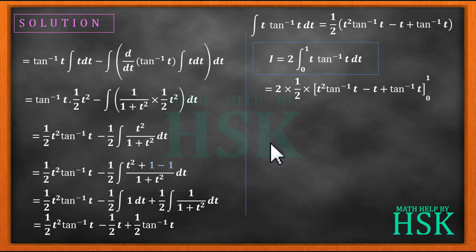Now 2 into 1 by 2 will be 1. On solving the limits we have value of i is equal to 1 square tan inverse 1 minus 1 plus tan inverse 1, minus 0 square into tan inverse of 0 minus 0 minus tan inverse of 0. On simplification we shall obtain 2 tan inverse 1 minus 1.